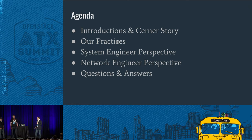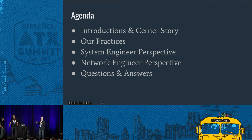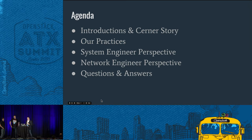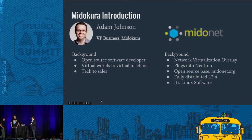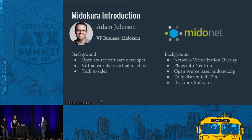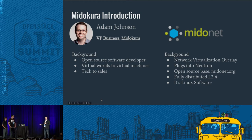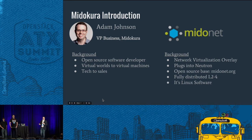We're going to go over some quick introductions. Then these guys are going to go through their story around implementing NVOs for their OpenStack Cloud — some real practical experience. Just a little bit about myself: I'm from a company called Mitokora, and we created software called MitoNet, which we open sourced back at the OpenStack Paris summit. MitoNet is a network virtualization overlay — distributed software networking that plugs into Neutron. It's Apache licensed, we have an enterprise model, and Cerner is one of our users.